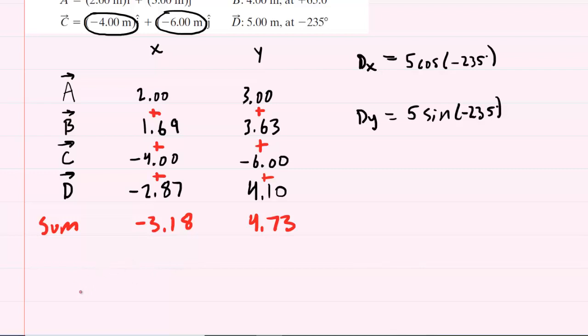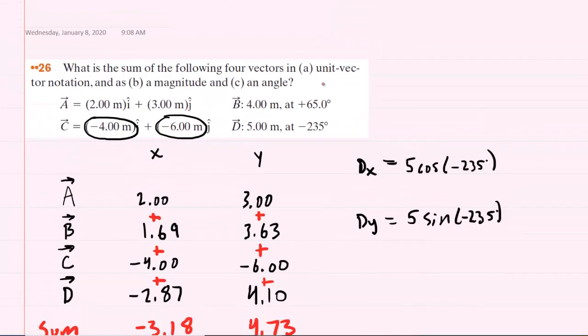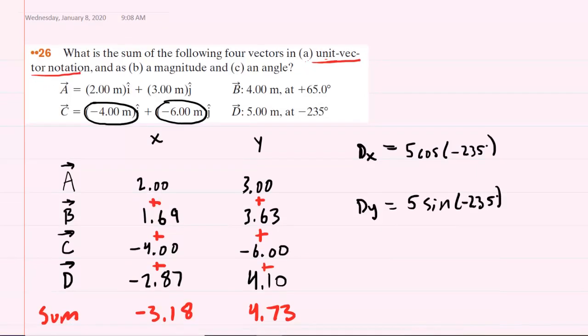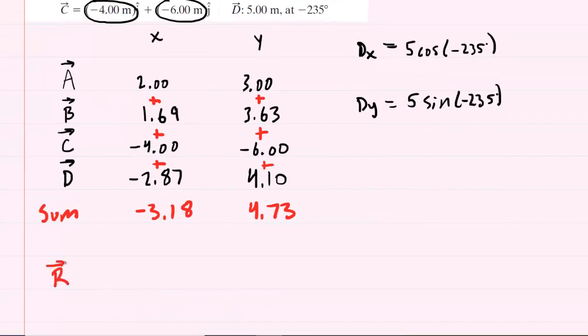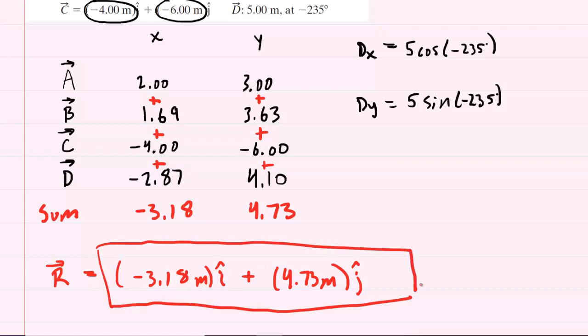We can write these results in unit vector notation, which indeed is exactly what part A of the question is asking us to do. It wants us to write the answer in unit vector notation. So we've already found the sum. We can therefore say that the resultant vector is equal to negative 3.18 meters, and that would be in the X direction, so we would use the i hat symbol, plus 4.73 meters. And that's in the Y direction, so we would use the j hat notation. And this would be the sum of the four vectors in unit vector notation.